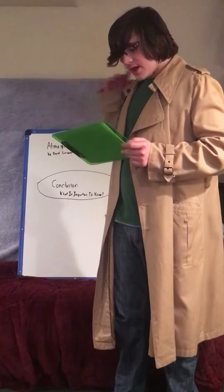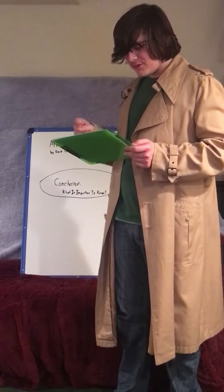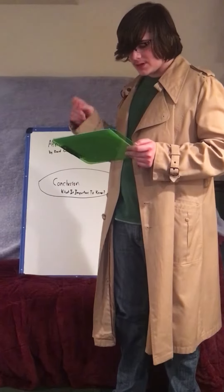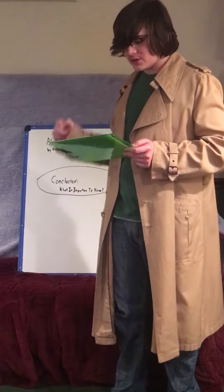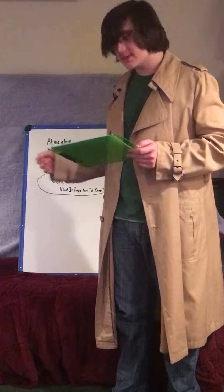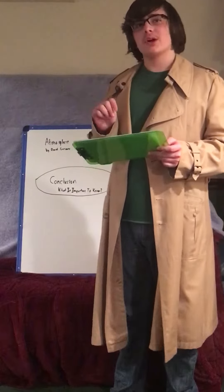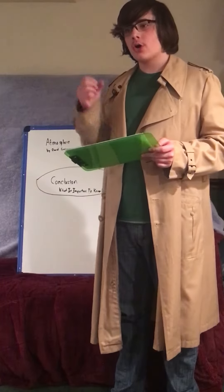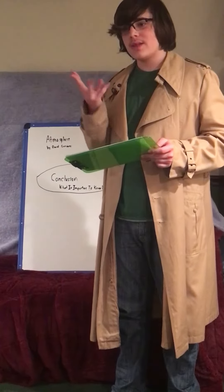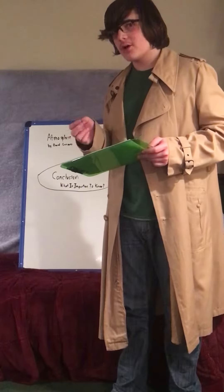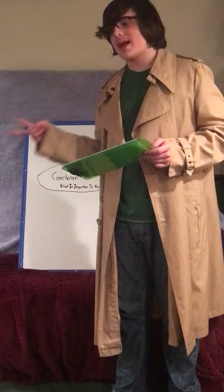First things first, there are defined layers of the atmosphere, and they have specific properties such as temperature, chemical composition, and physical characteristics. The four layers of the atmosphere in order are the troposphere, the stratosphere, the mesosphere, and the thermosphere — which the thermosphere is divided into the ionosphere and exosphere.